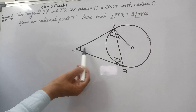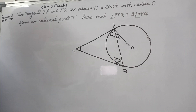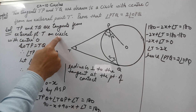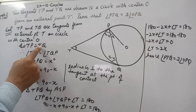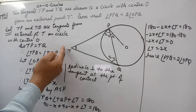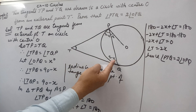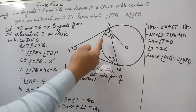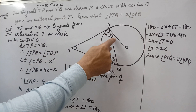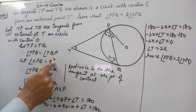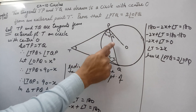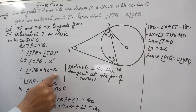Now let's write the formal proof. TP and TQ are tangents from external point T on the circle, so TP equals TQ because tangents from external points are equal. Therefore, angle TPQ equals angle TQP since triangle PTQ is isosceles and angles opposite equal sides are equal. Now let us suppose angle OPQ equals x degrees.